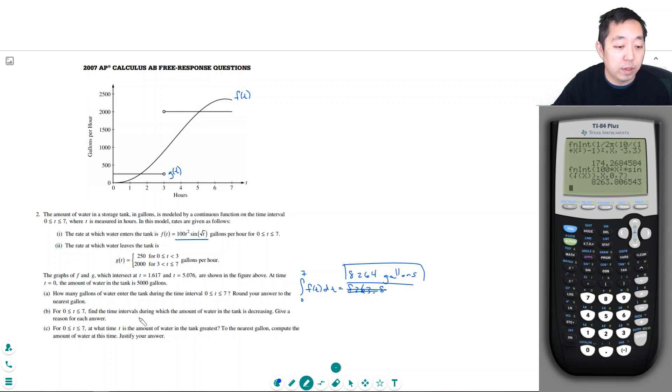For part B, find the time intervals during which the amount of water in the tank is decreasing. Give a reason for each answer. So the amount of water is decreasing when g of t is greater than f of t, because when g of t is greater than f of t, then that means whatever is leaving is more than whatever is entering.